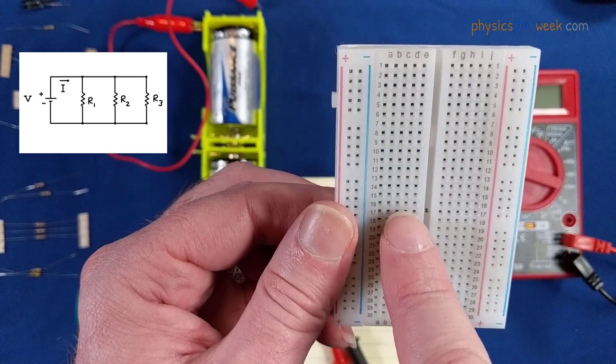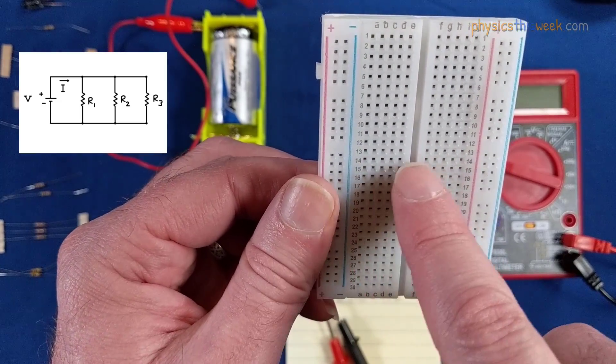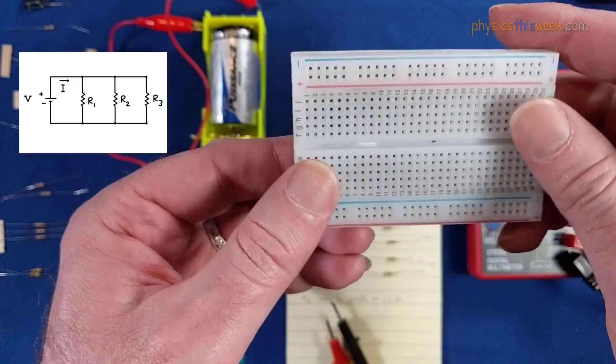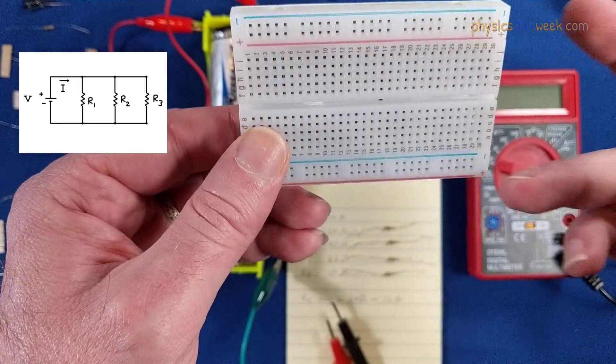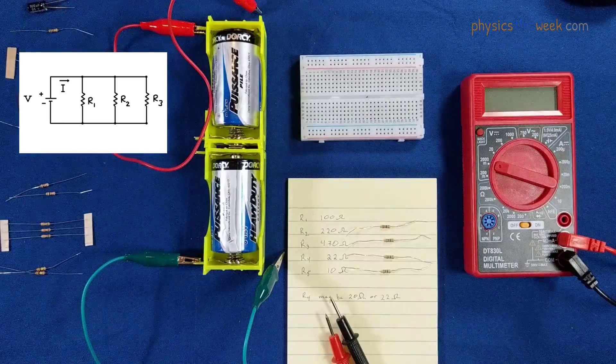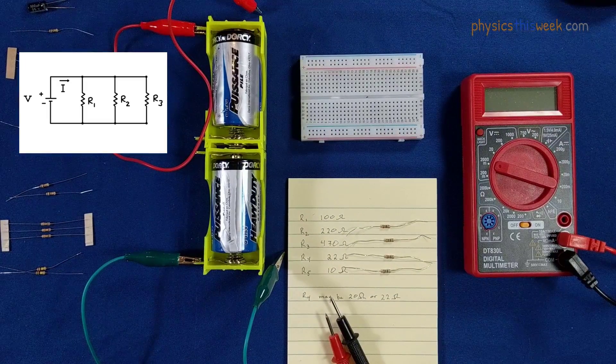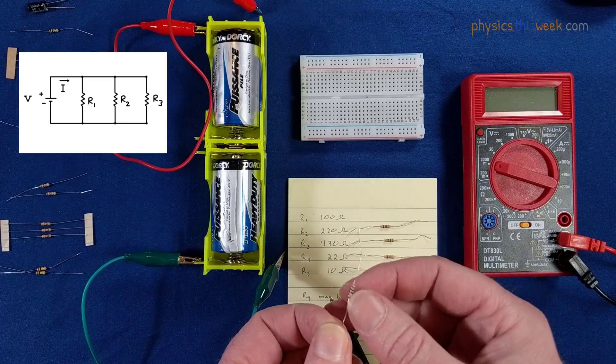A lot of times when you have it set this way, this would be row 14 or row 15 and these would be the columns. When I turn it this way I'm still going to refer to it as rows even though traditionally that would be columns. Again that doesn't really matter too much. What really matters is that my connections are correct. So I'm going to take the 100 ohm resistor.